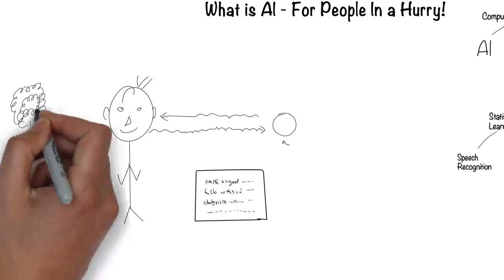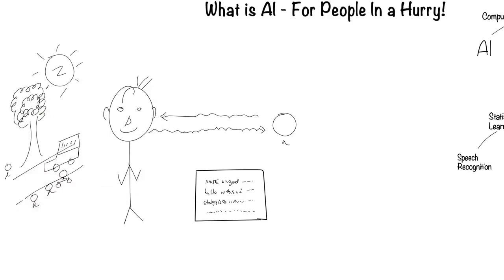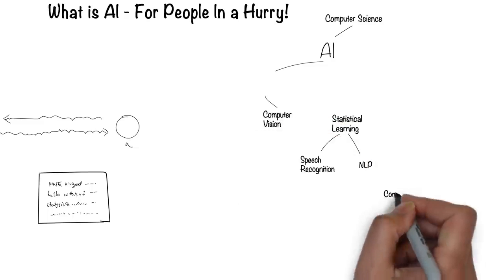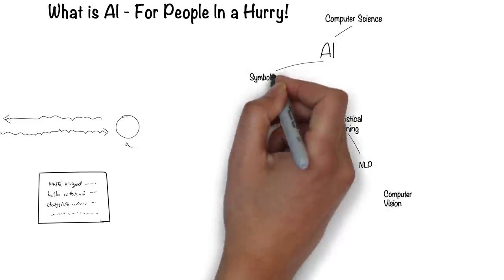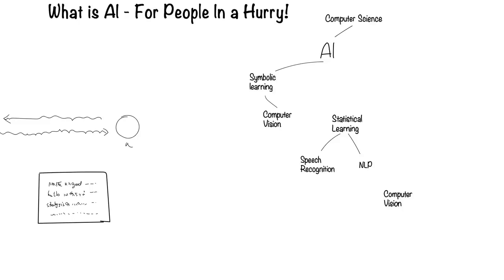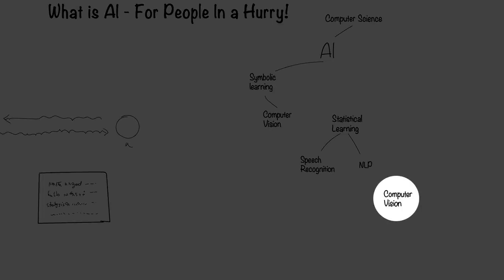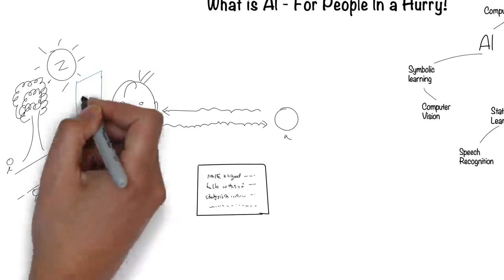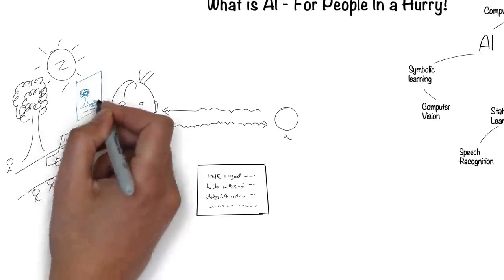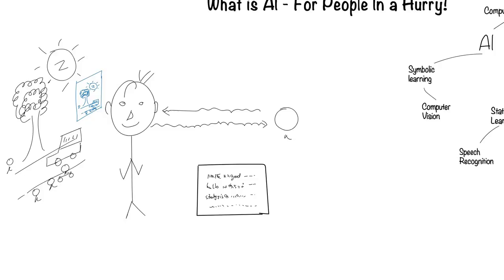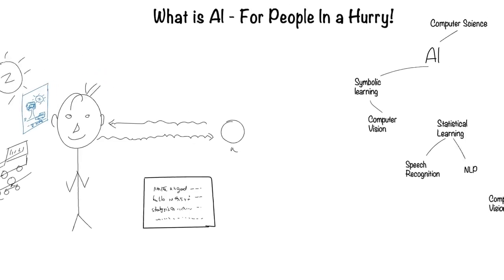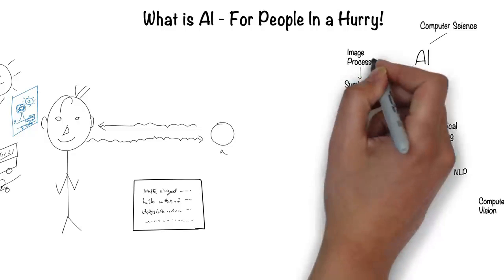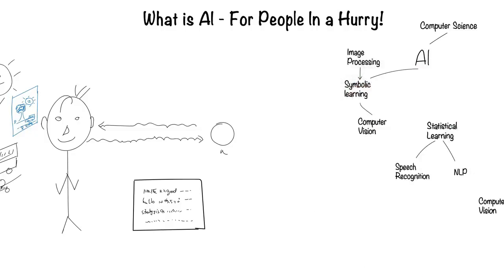Humans can see with their eyes and process what they see. This is the field of computer vision. Computer vision falls under the symbolic way for computers to process information, though recently there's been another way, which we'll come to later. Humans recognize the scene around them through their eyes, which create images of that world — this is the field of image processing, which, even though not directly related to AI, is required for computer vision.